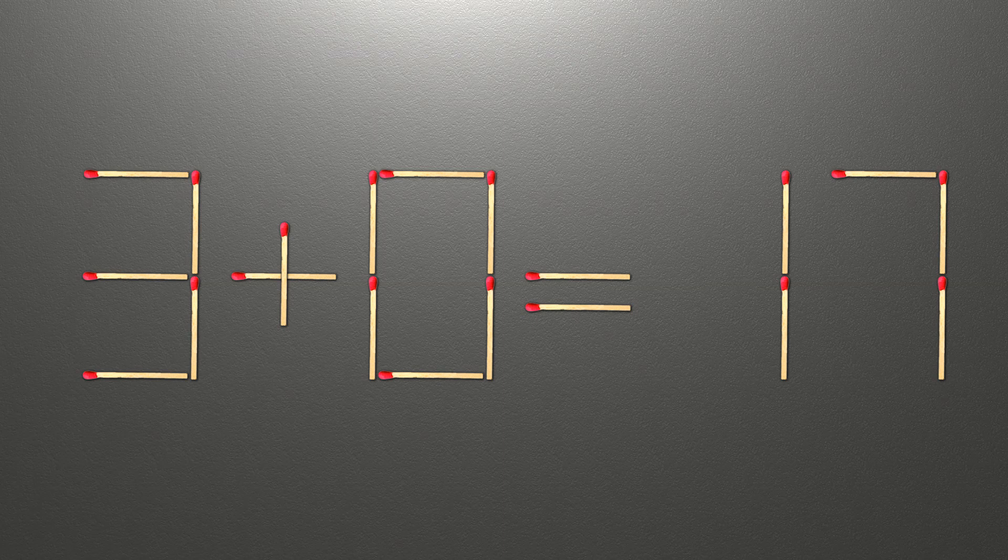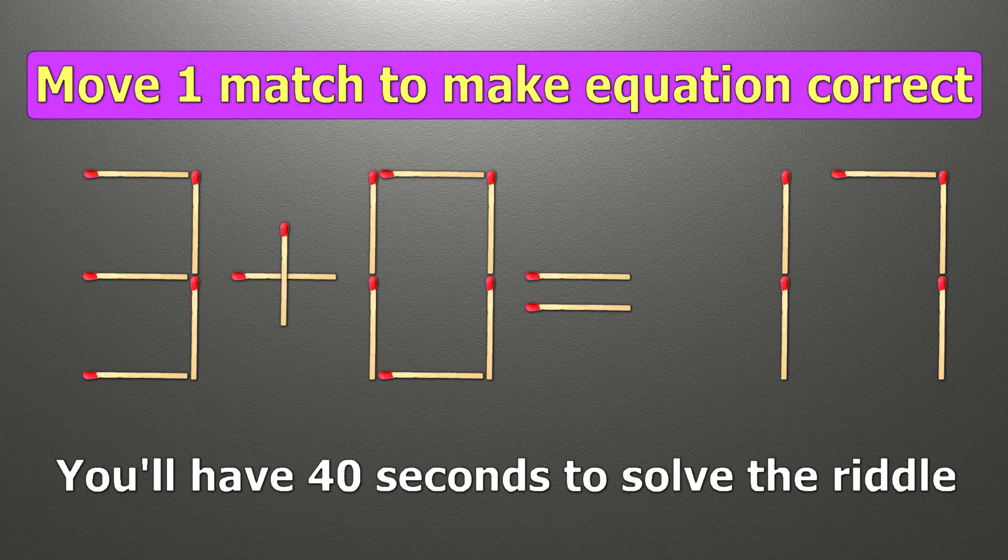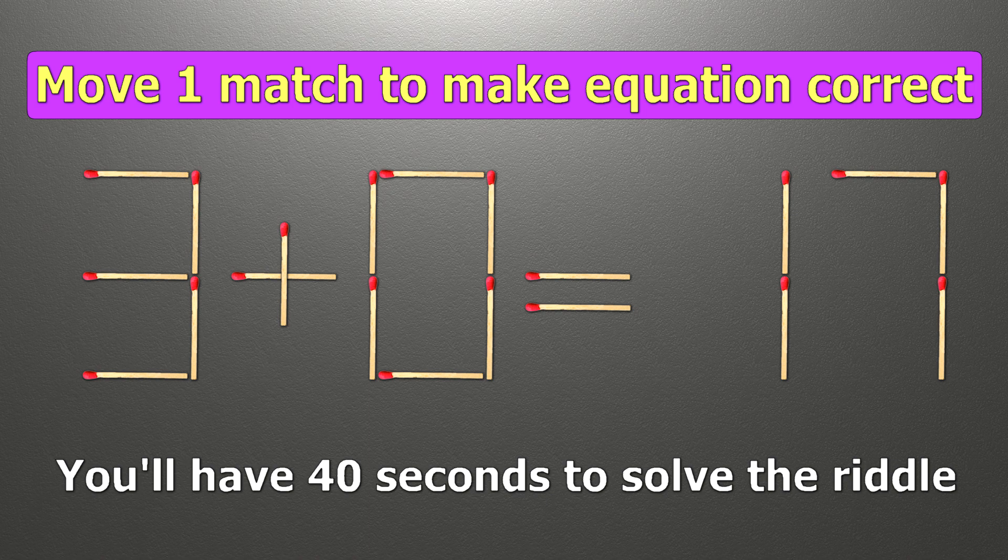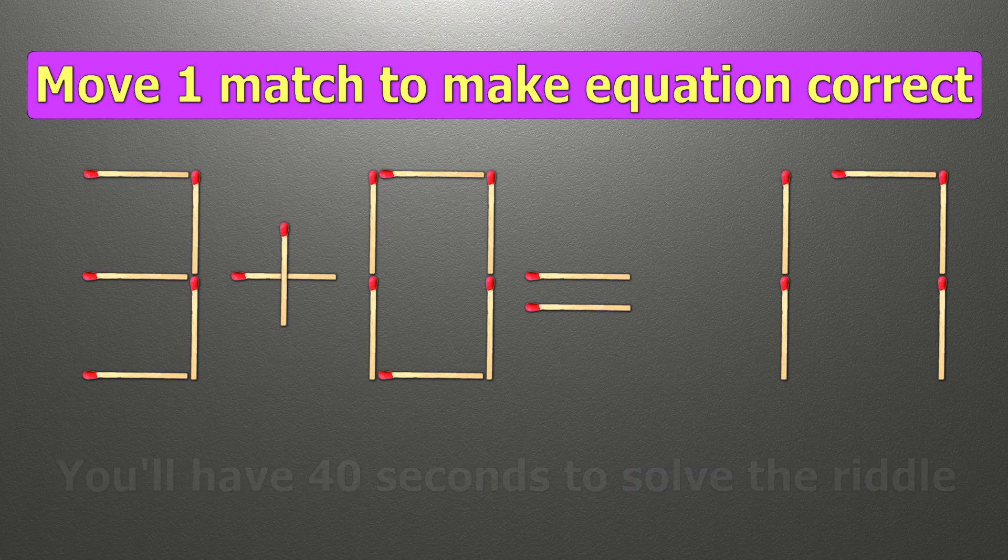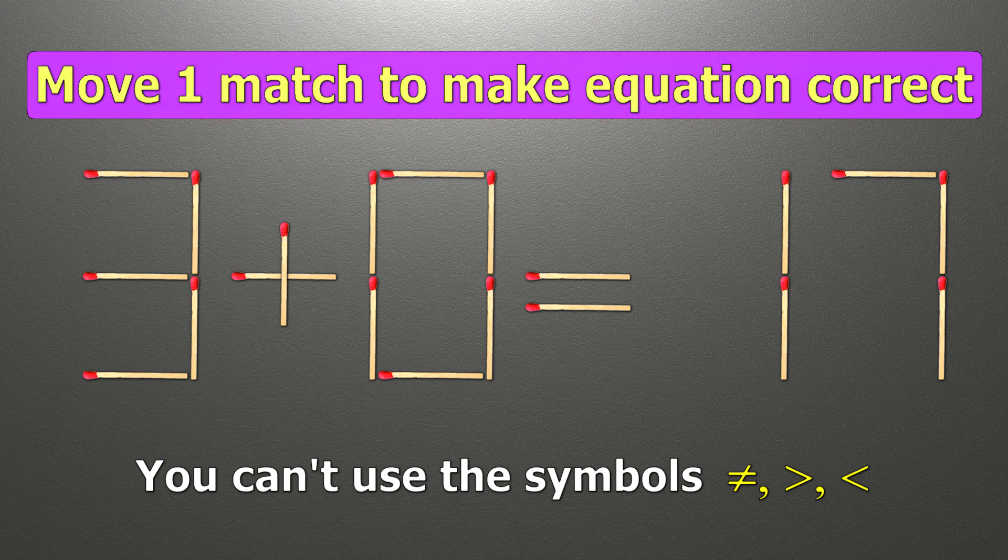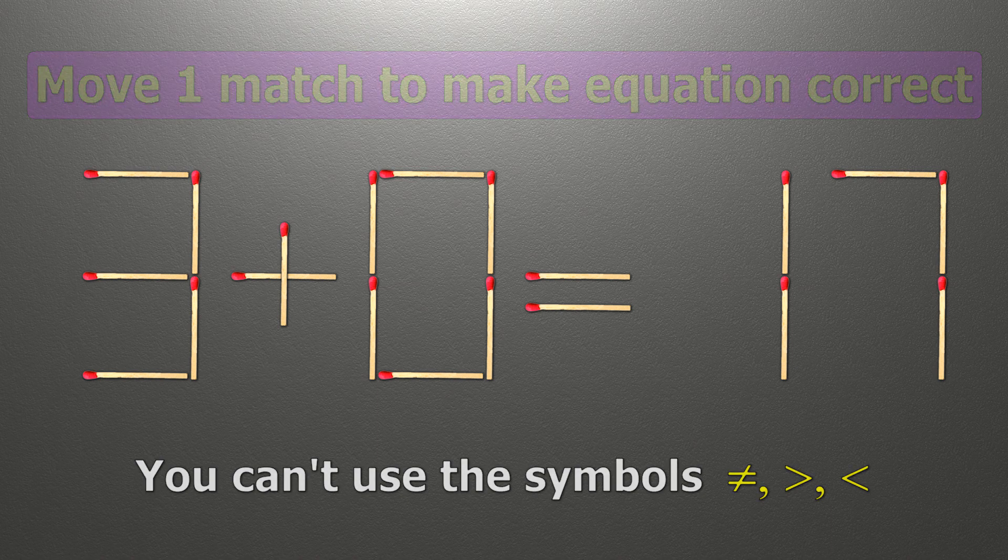Hello! We have the equality 3 plus 0 equals 17. Our equality is wrong. We need to move one match to make our equality correct.